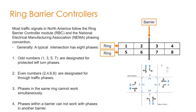Previously in ring barrier controller: most traffic signals in North America operate under the ring barrier module using the NEMA — the National Electric Manufacturing Association — phasing convention. The idea is you have two rings divided by a barrier. Any phase on one side of the barrier cannot work with any phase on the other side, and essentially one side of the barrier is your North-South traffic and the other is East-West.